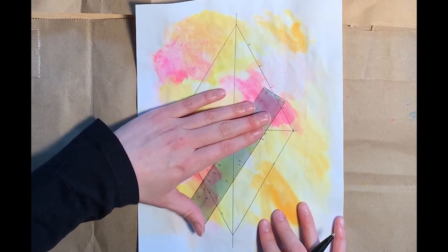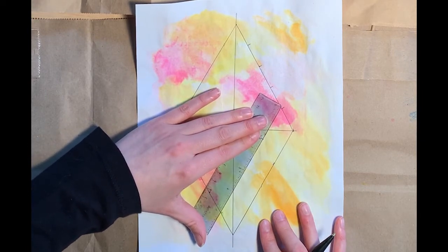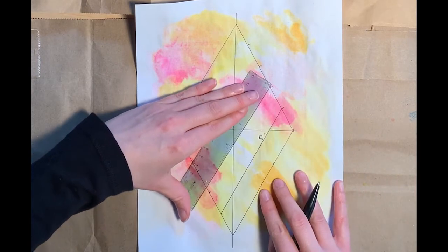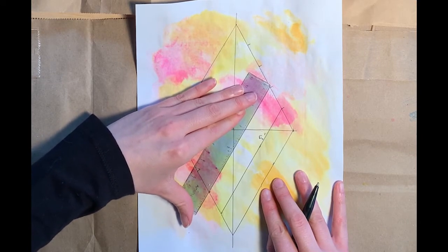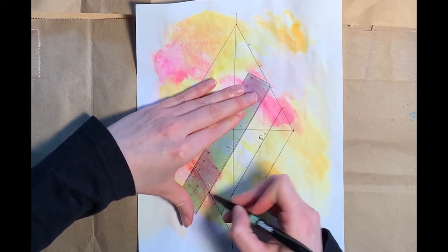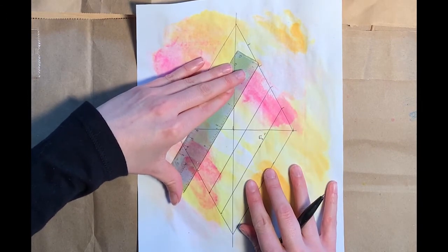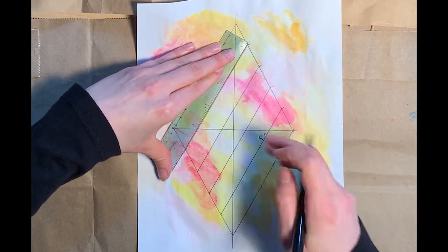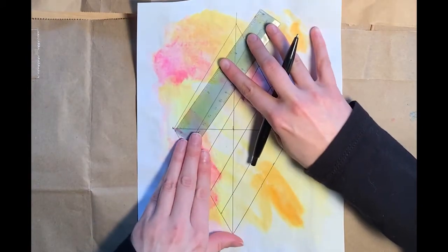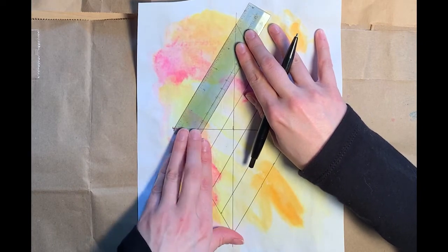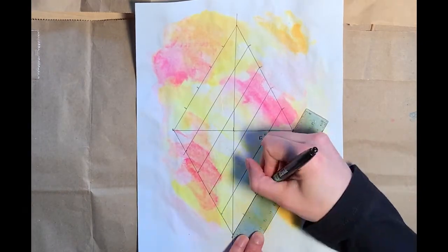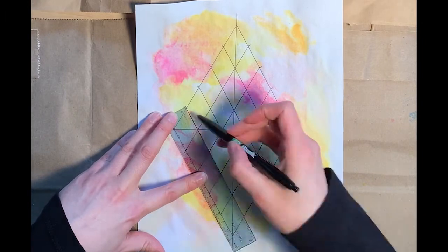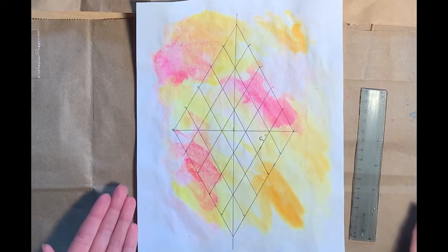So now we need to connect all of the notches we just made. So start at the bottom, make sure you line up both notches, and complete the line. Now just keep going, connecting all the notches that you made so that you make diagonal lines. Great, so now we have to do it on the other side. So grab your ruler and measure out your inch intervals. One inch, two inch, three inch, four inch, same on the other side, and then connect your notches.